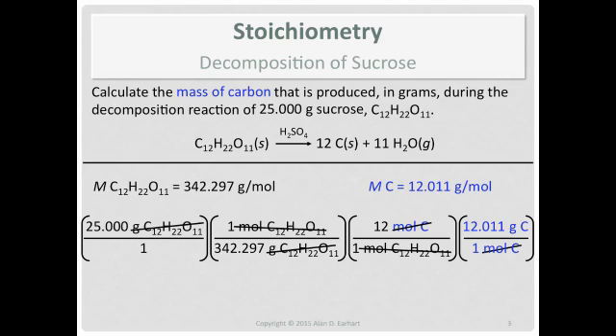Let's check our units just to make sure. We've got grams of carbon, which is what we want. Now multiply everything out. Five significant figures because of the 25.000 and everything else has at least five significant figures. The mole ratio, the 12 over 1, is assumed to be exact. We get 10.527 grams of carbon.